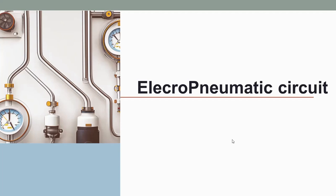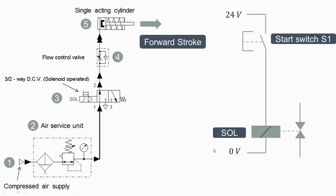In this video we'll see how the electro pneumatic circuit works. The various components are shown here. The first one is the compressed air supply. Second one is the air service unit consisting of FRL unit, pressure relief valve, pressure gauge etc.